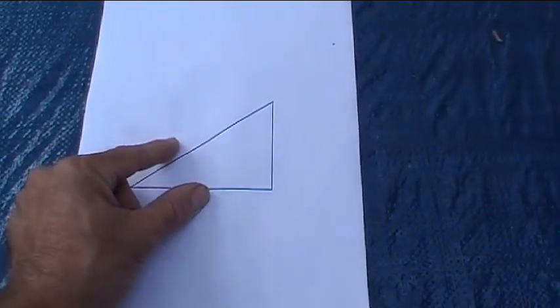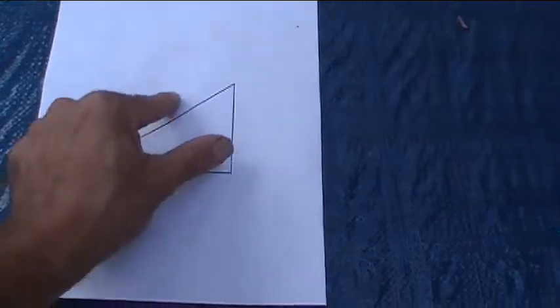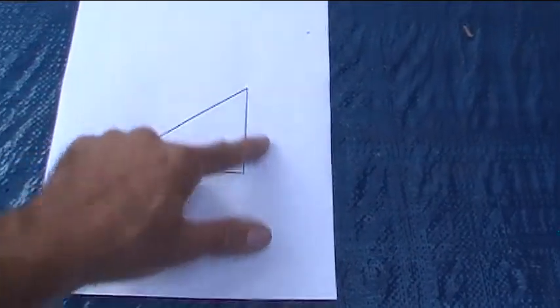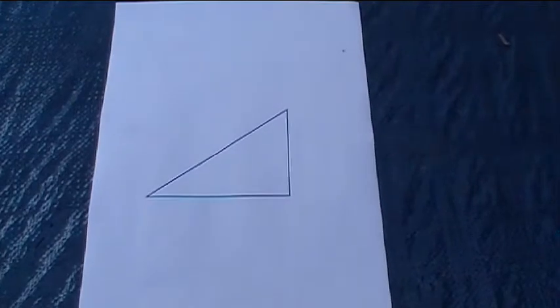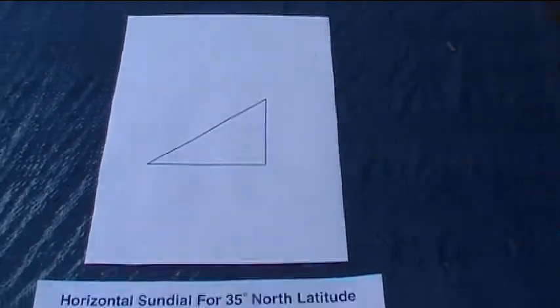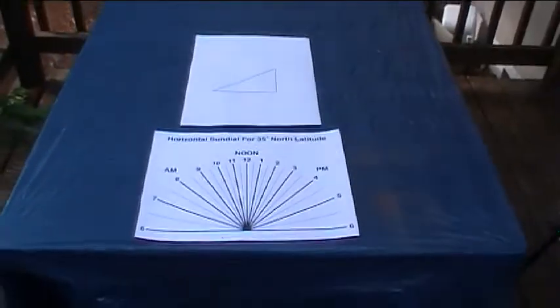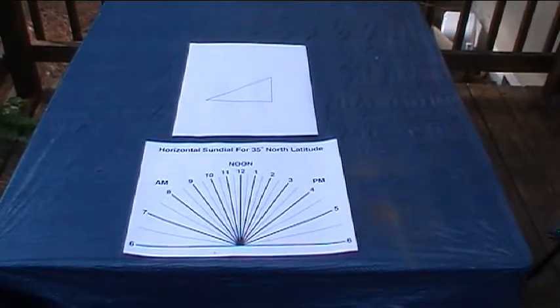If you were at 48 degrees north latitude, you would have a gnomon that was a little bit bigger this way. It would have a higher angle. So that is dependent on the latitude, the angle of the gnomon. And the two go together and form a horizontal sundial. So let's take a look at how that all works.